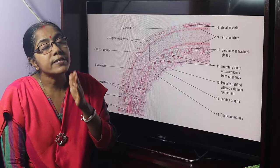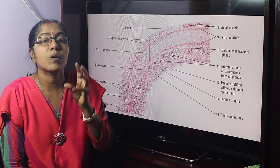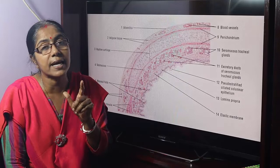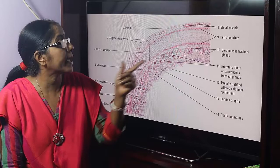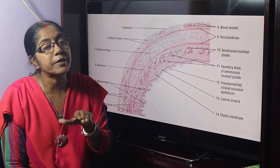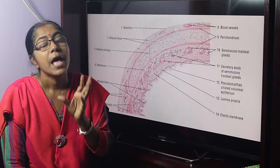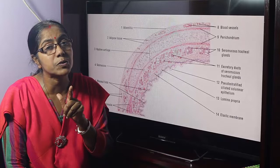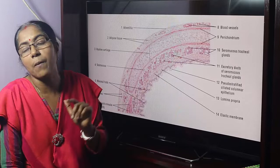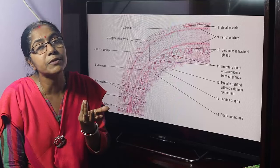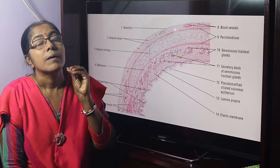The lining is pseudostratified ciliated columnar epithelium, and the cells include goblet cells. We know that the large gut mucosa is lined by simple columnar epithelium. In our respiratory system, the lining epithelium is pseudostratified ciliated columnar epithelium. The goblet cell is a unicellular gland — its secretion is mucus. Lamina propria is loose connective tissue, containing numerous connective tissue cells, fiber cells, and blood cells.